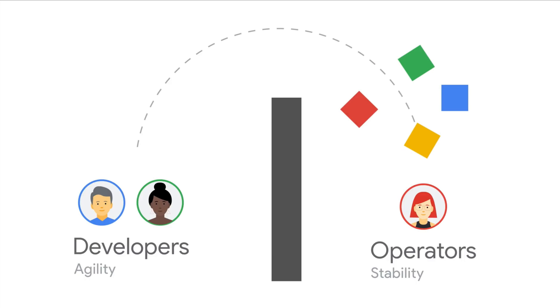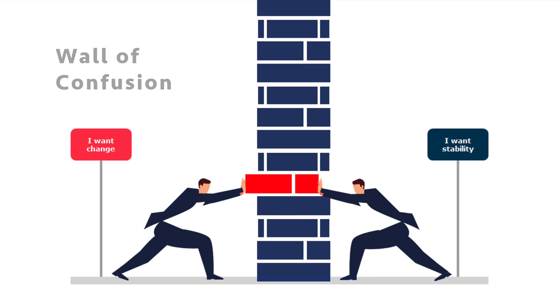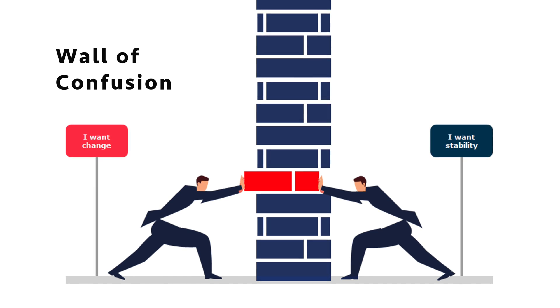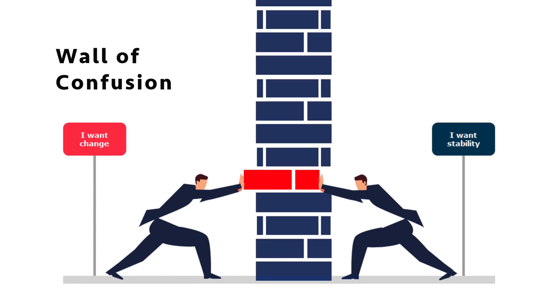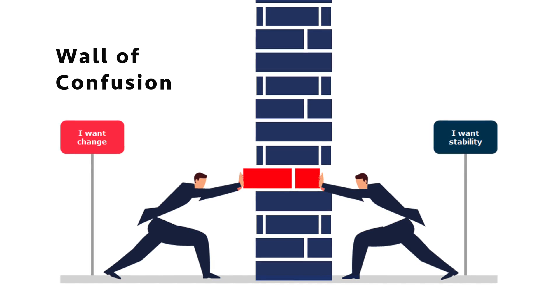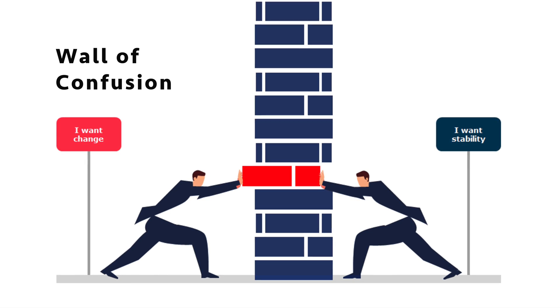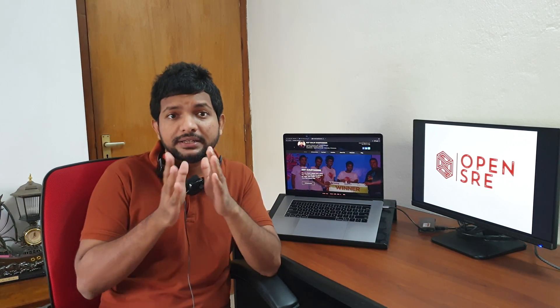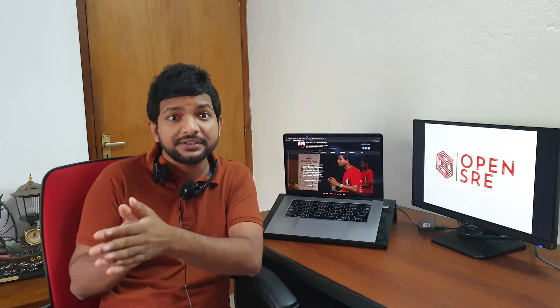Because of this, the developers started giving out a lot of code to the operations engineers, and the operations engineers started putting up quality gates to make sure the speed of deliveries was reduced so they had enough time to manage the deployments. This confusion, or this responsibility gap, is called the wall of confusion — the barrier between teams like developers and operations.